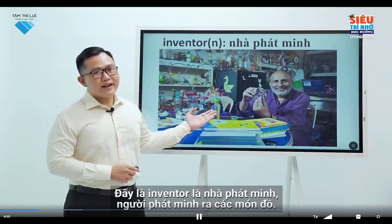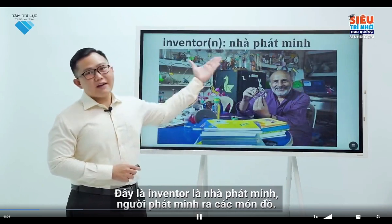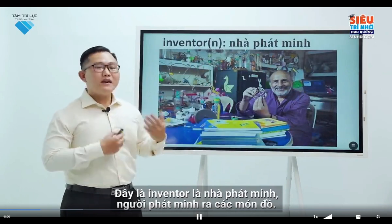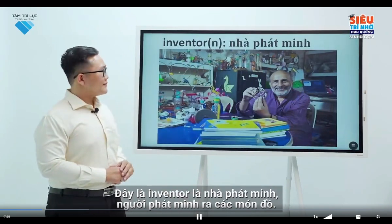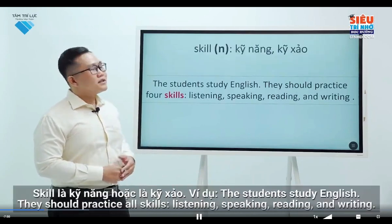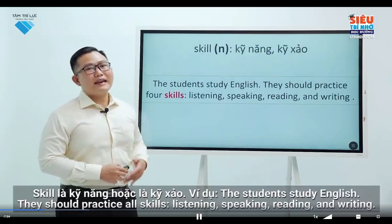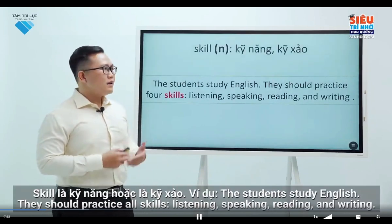Inventor. Inventor is a person who has invented something. Skill. Skill is one's ability.